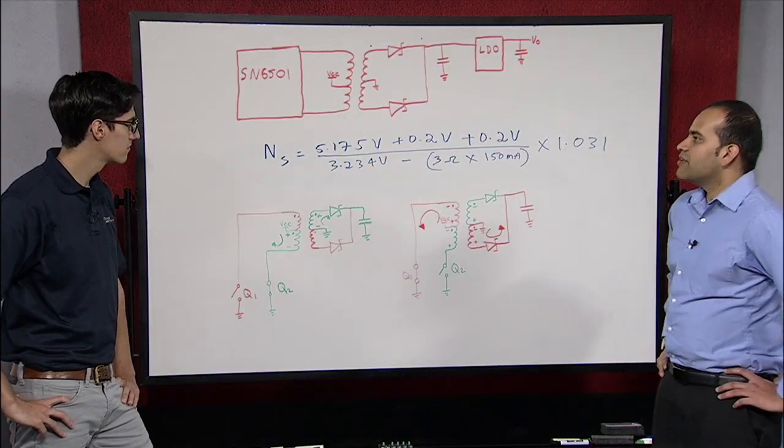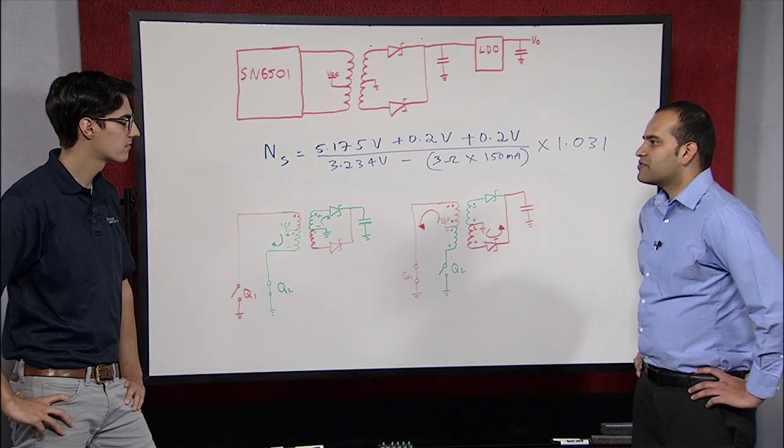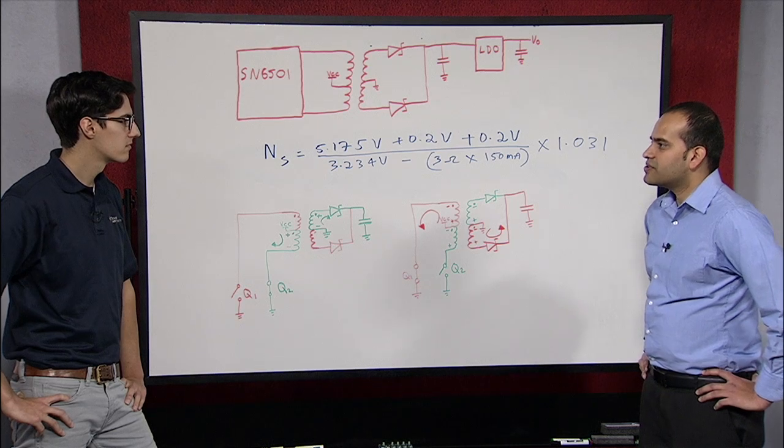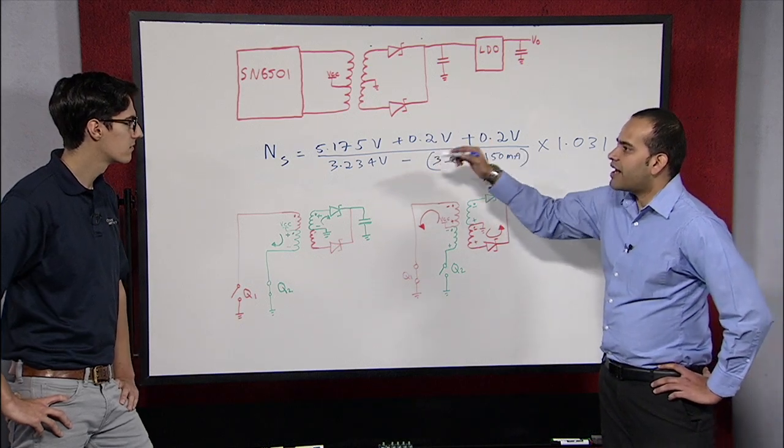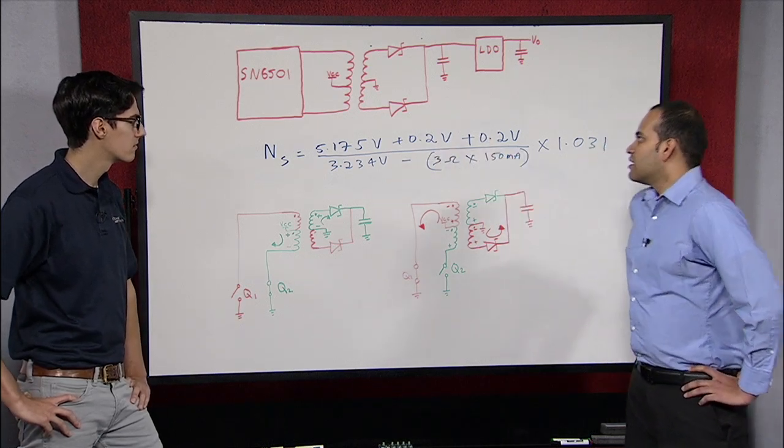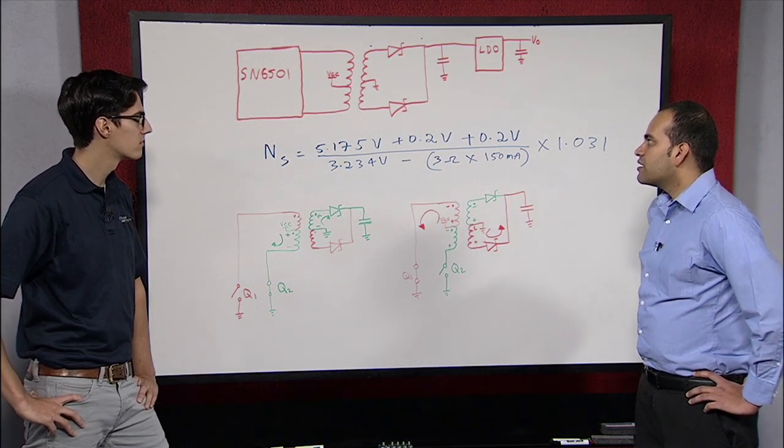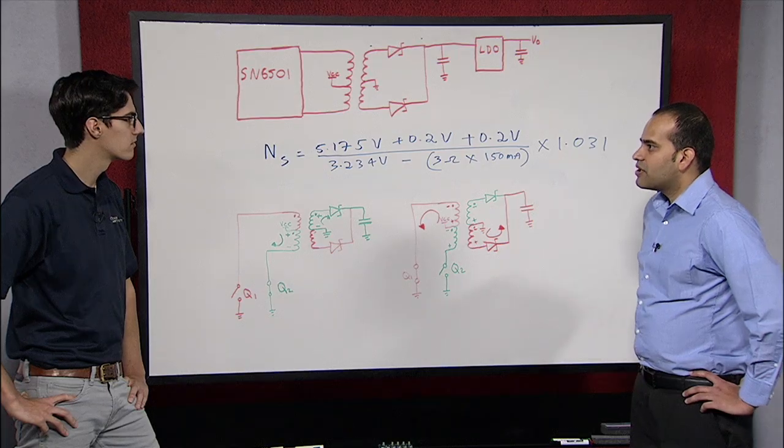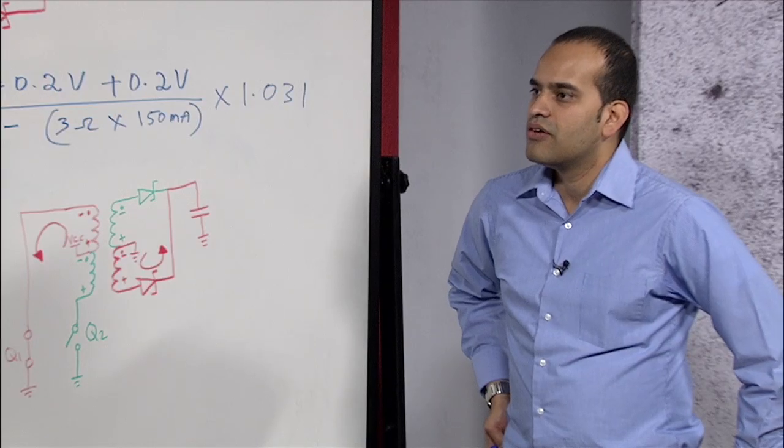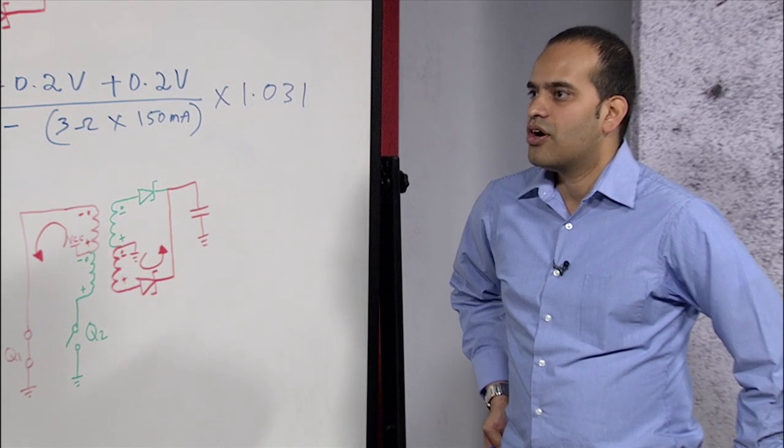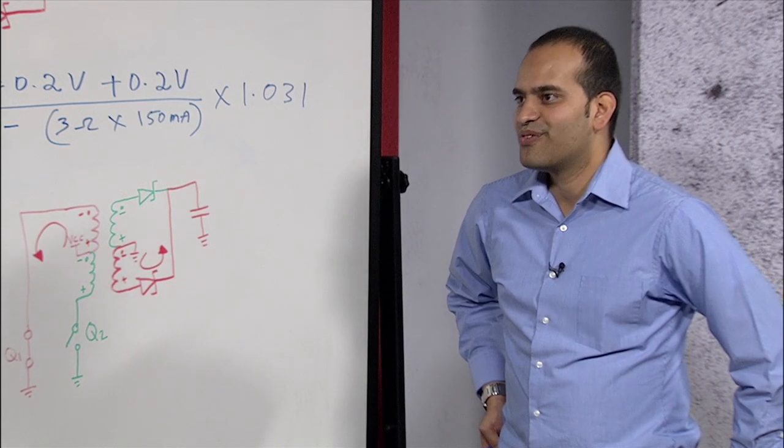And lastly, we also need to make sure that the transformer meets the appropriate safety standards and the dielectric isolation between the primary and the secondary. For this application, my recommendation would be meeting UL60950-1 safety standard with functional insulation and a dielectric isolation of 2500 VRMS for one minute.